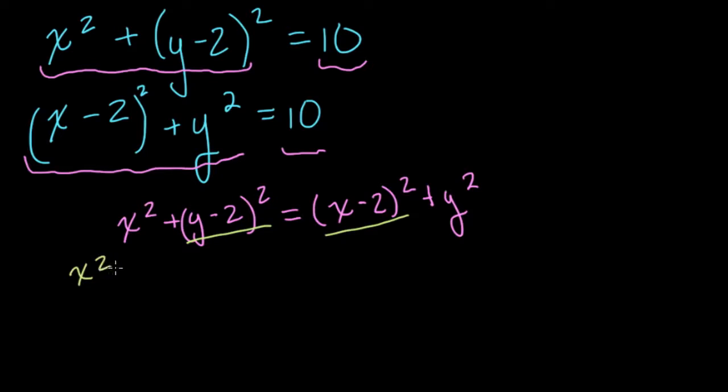So we get what? Well, we get x squared plus (y-2) times (y-2), and that equals (x-2) times (x-2) plus y squared.